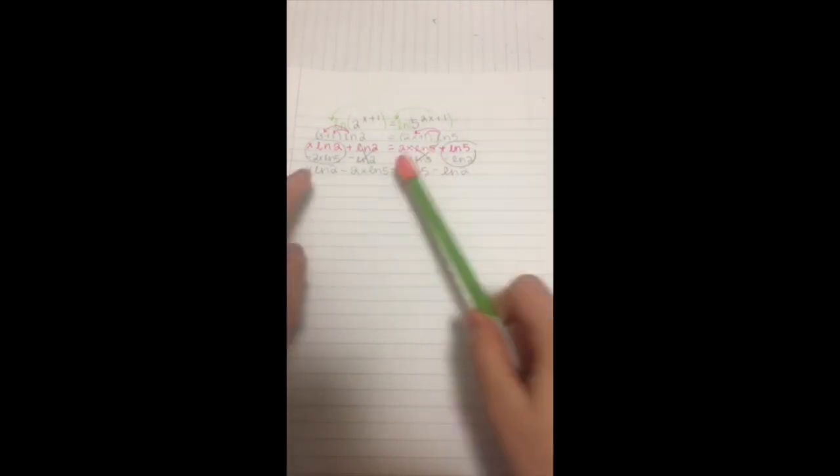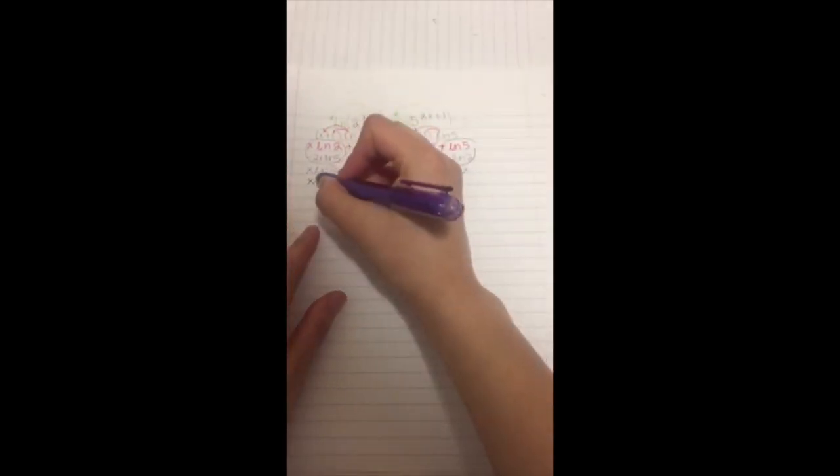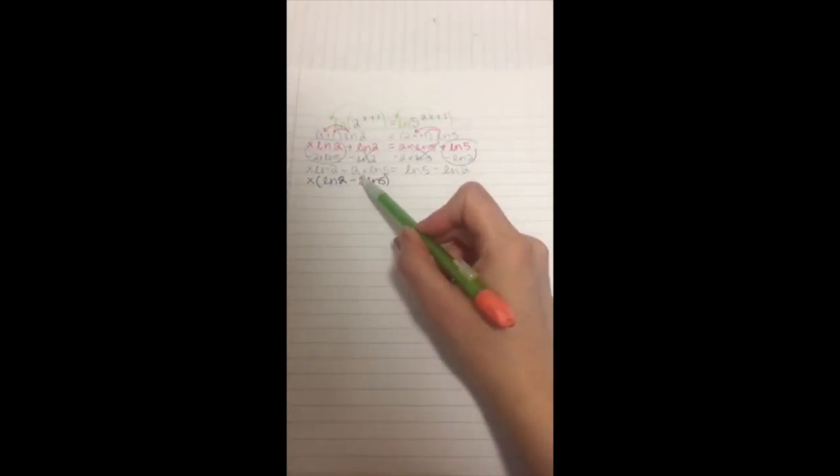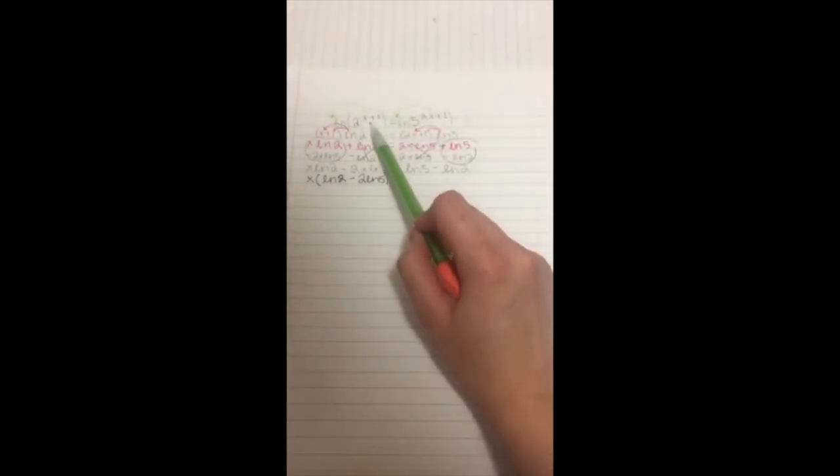Then, the fifth step would be to factor out on this side since we do have an x in common here. So you need to take that out. And it would be x times Ln2 minus 2Ln5. And then, this number right here would have to go back because we can't do anything unless that is gone.